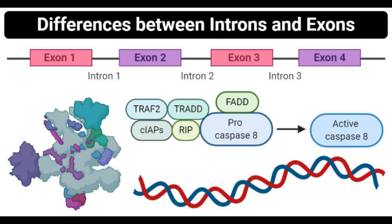The term introns indicates both the DNA sequences within the gene and the corresponding sequences in RNA transcripts. Introns are found in the genes of many eukaryotic organisms and also some viruses, and are located in most genes including those that generate proteins, ribosomal RNA (rRNA), and transfer RNA (tRNA). These are, however, not found in prokaryotes.